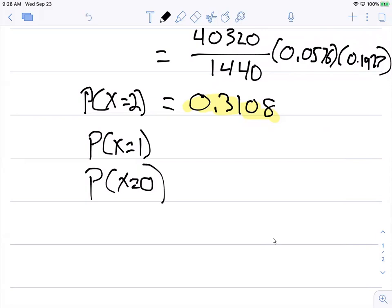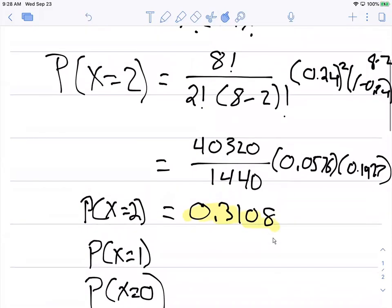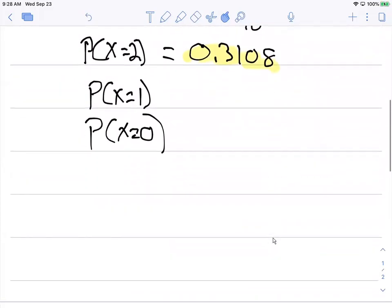To do that, all we would need to do is plug in, instead of two in our formula, one and zero, and make the calculation two more times.